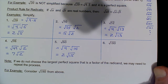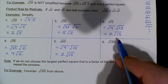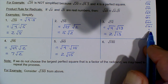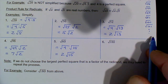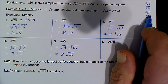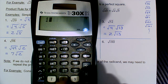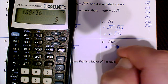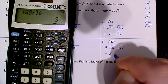For 180: working up the list past 121, 100, 81, 64, 49 — none of those divide evenly. Does 36? Check: 180 divided by 36 is 5. Yes! So break this down to the product of two square roots: 36 as the perfect square and 5 as the leftovers. The square root of 36 is 6, and the square root of 5 tags along.